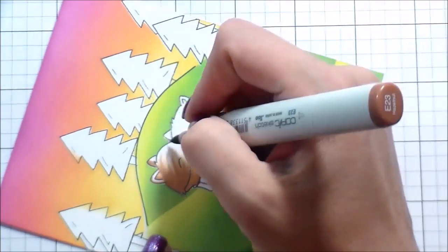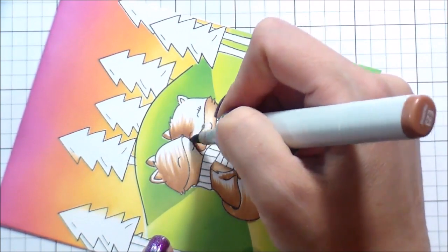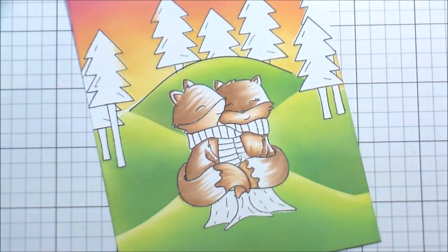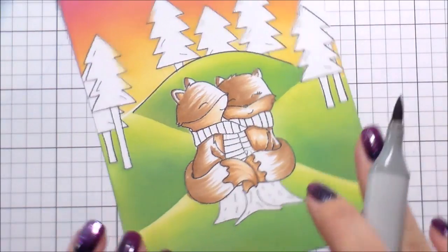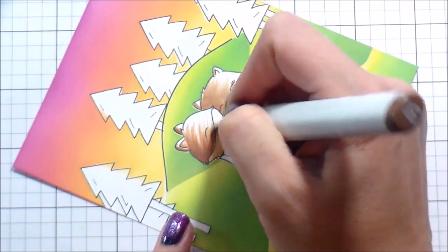You want to make sure that you're following the shape of their tails because they would not have straight fur there. The fur would wrap around with that shape. So just you want to make sure you're paying attention to those things, no matter what you're coloring.